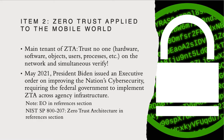Item two: zero trust applied to the mobile world. The main tenet of Zero Trust Architecture, ZTA, is trust no one — hardware, software, objects, users, processes on the network and in information systems — and simultaneously always verify. In May 2021, President Biden issued an executive order on improving the nation's cybersecurity requiring the federal government implement ZTA across agency infrastructure.